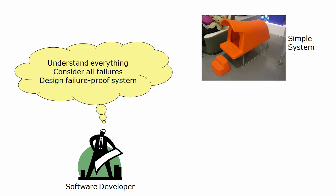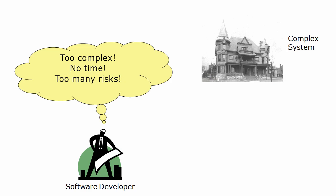When you are designing software, you'd ideally understand everything, consider every possible failure, and design a failure-proof system. If you've worked on systems before, this is probably what you've been trying to do with varying success. So why don't we always do that? Three reasons: because software is usually too complex to fully understand, you have limited time, and you simply cannot identify every way that it could crash, produce bad output, run too slowly, etc.